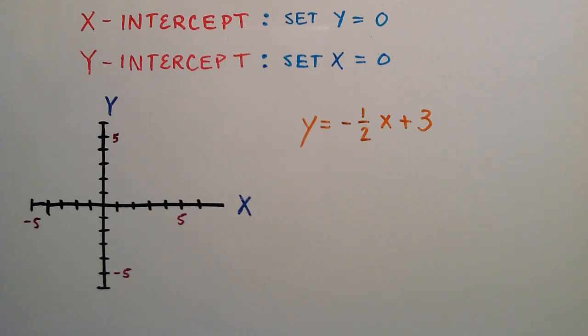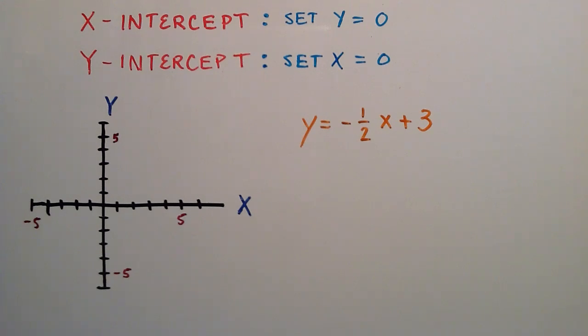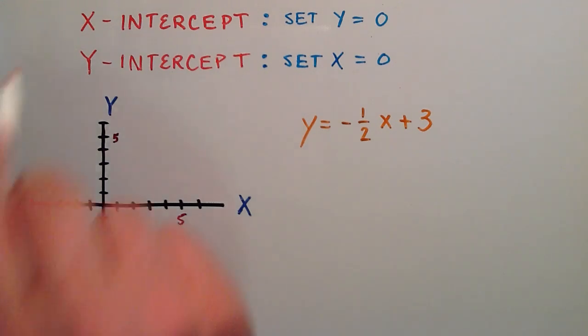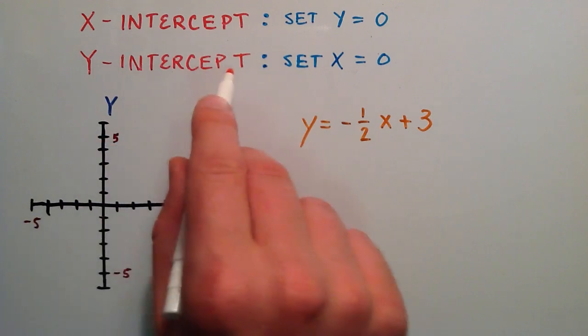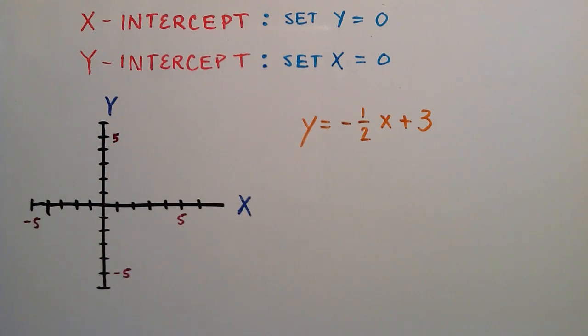Hey everybody, this is Paul. Welcome to lesson 61 in the Intermediate Algebra Series. In this tutorial, I'll be doing an example on how to find the x and y intercepts of a line.